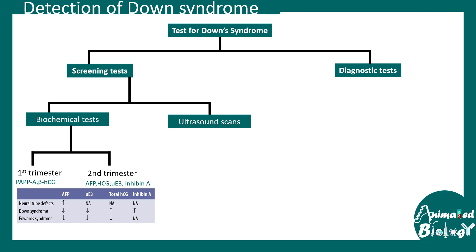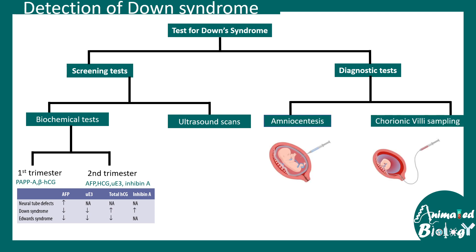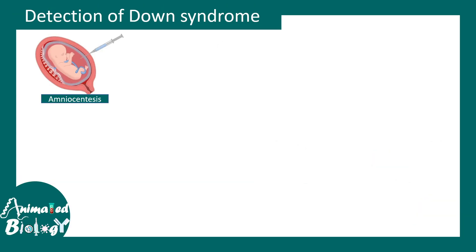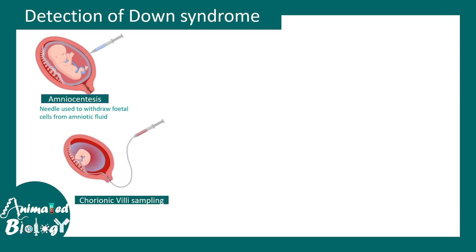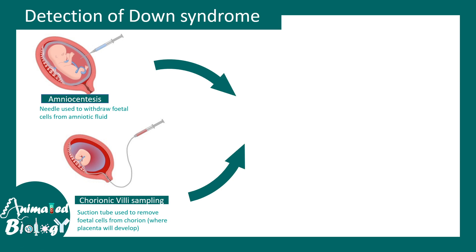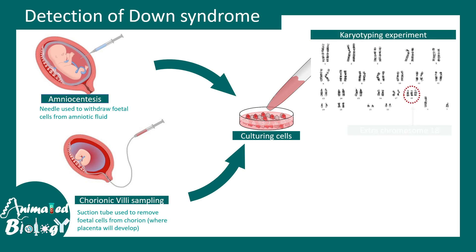The relative levels of these biomarkers correlate to the chance of developing a disease. Ultrasounds can look at nasal bridge architecture, though this is not a definitive test. More definitive tests are amniocentesis or chorionic villi sampling. In amniocentesis, a needle is used to withdraw fetal cells from the amniotic fluid; in chorionic villi sampling, a suction tube removes fetal cells from the chorion. These cells can be cultured and karyotyping can be done to identify an extra copy of chromosome 21.